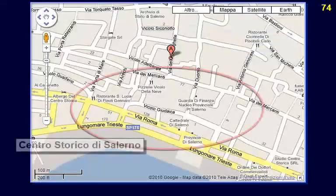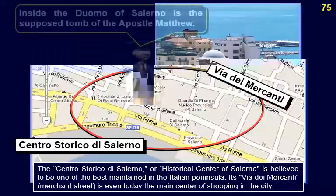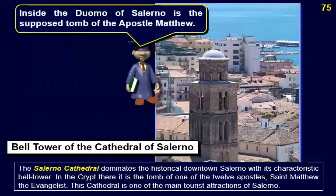The Centro Storico di Salerno, or historical center of Salerno, is believed to be one of the best maintained in the Italian peninsula. Its Via dei Mercanti — Merchant Street — is even today the main center of shopping in the city. The Salerno Cathedral dominates the historical downtown with its characteristic bell tower.